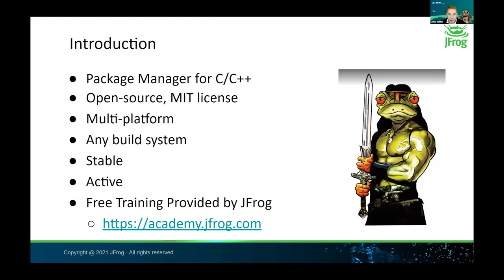Before I start doing the in-depth part of the examples, I want to provide a brief introduction to Conan. Conan is a package manager for C and C++. It is open source and published with an MIT license. It is also multi-platform, meaning it can run on Linux, Windows, and macOS — and actually anywhere Python can run. Various flavors of Unix can run it, and are known to do so, so the support is very broad.